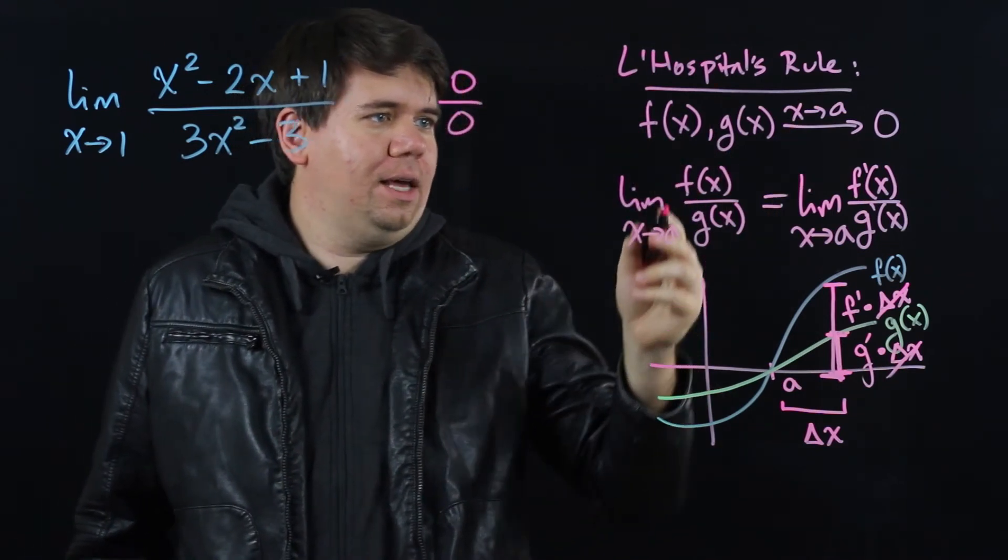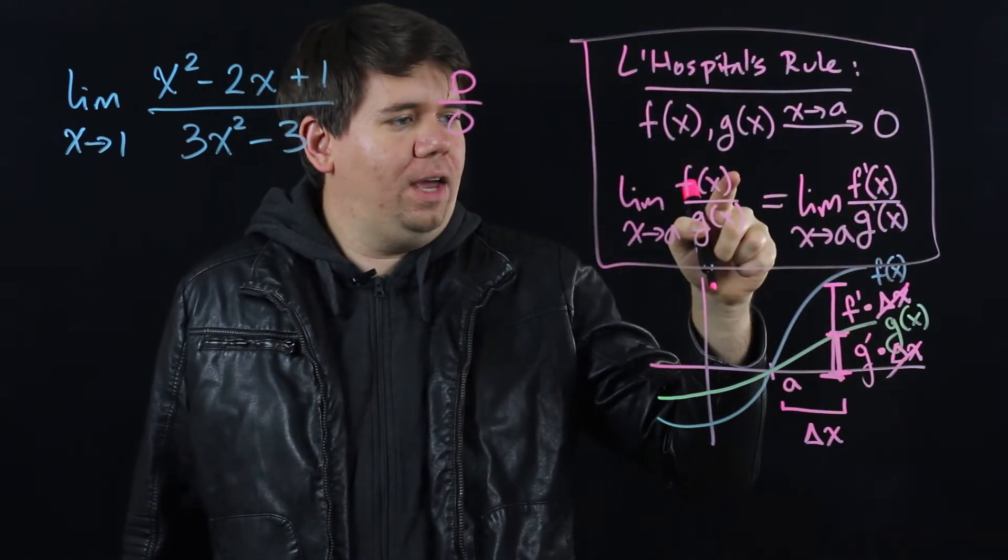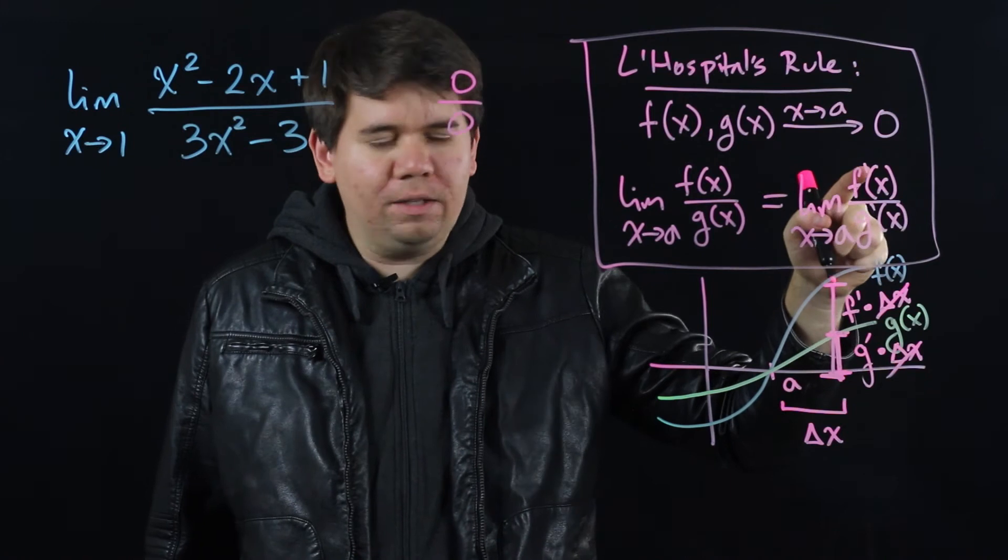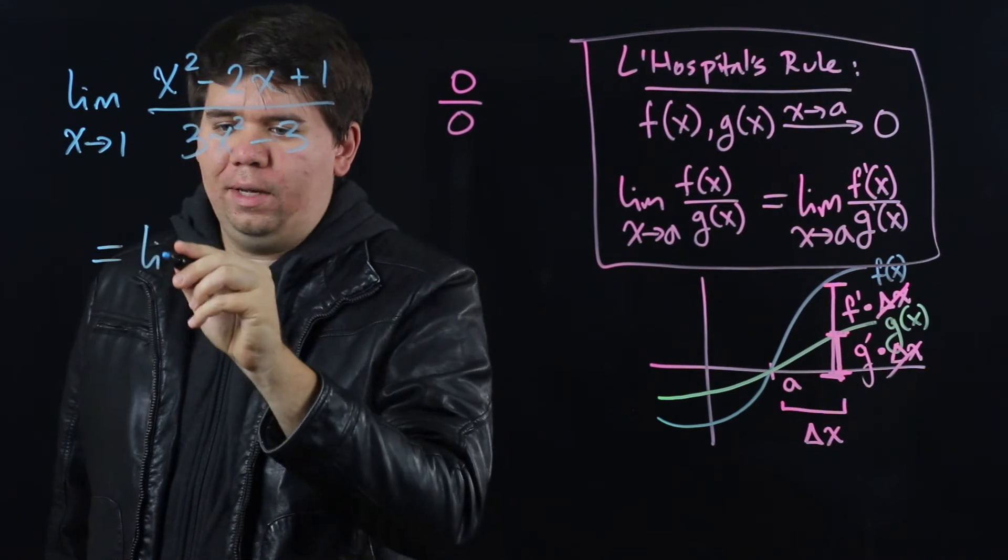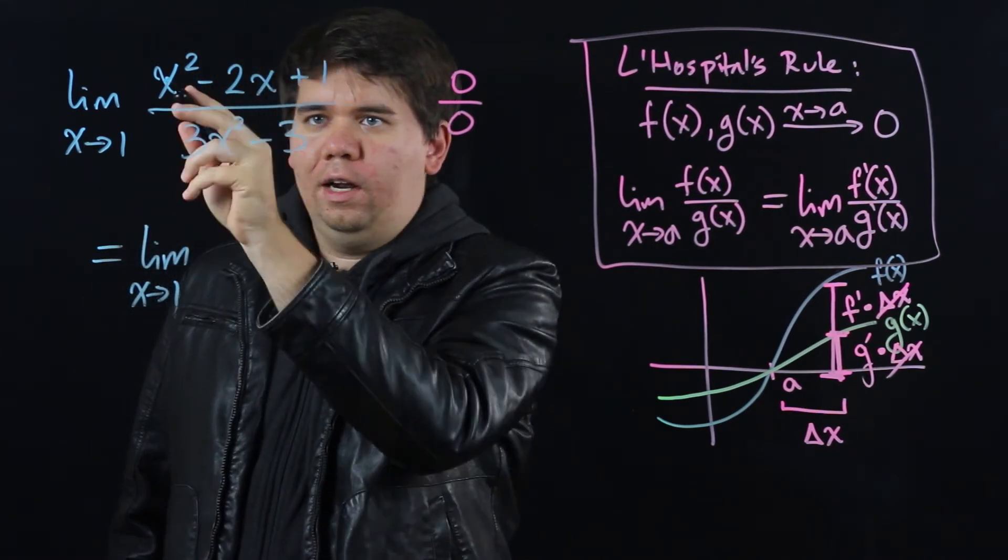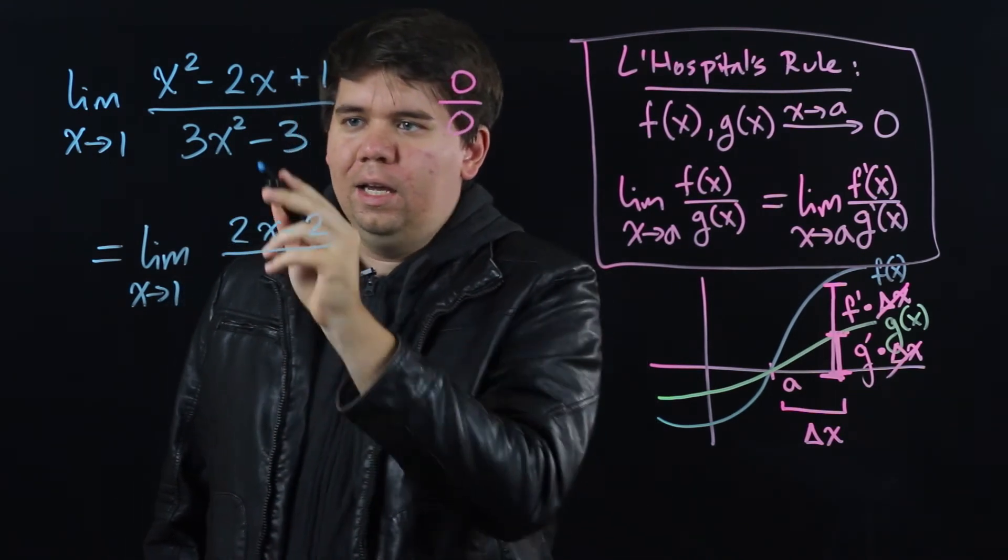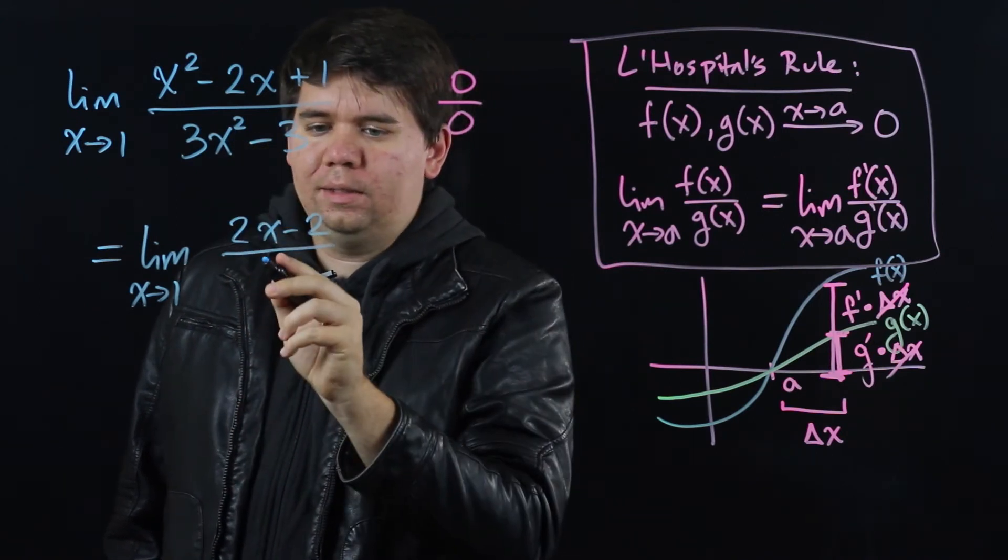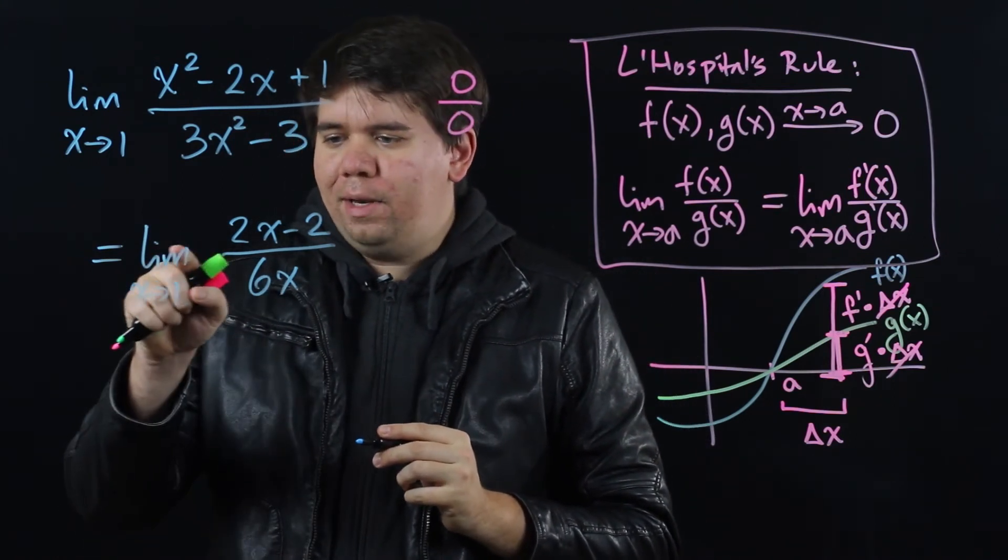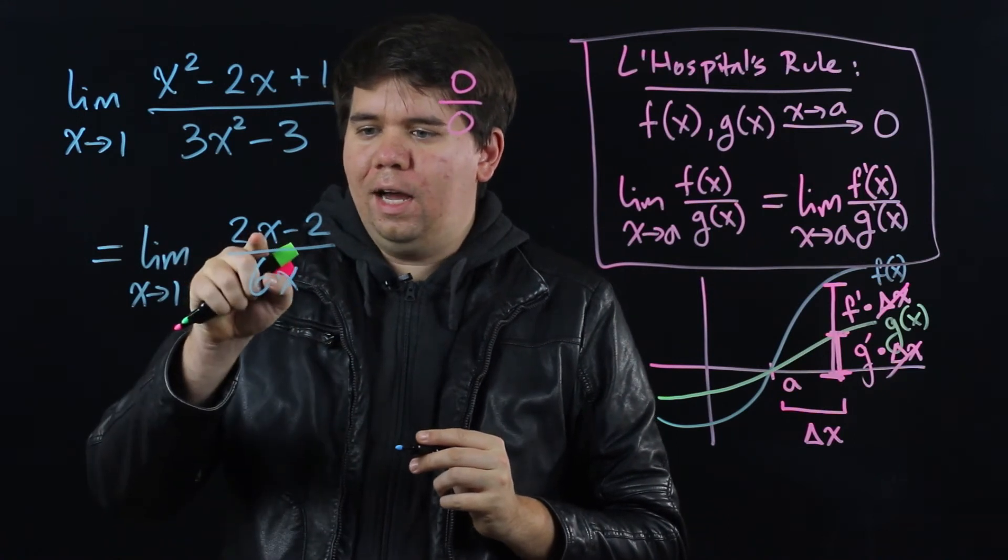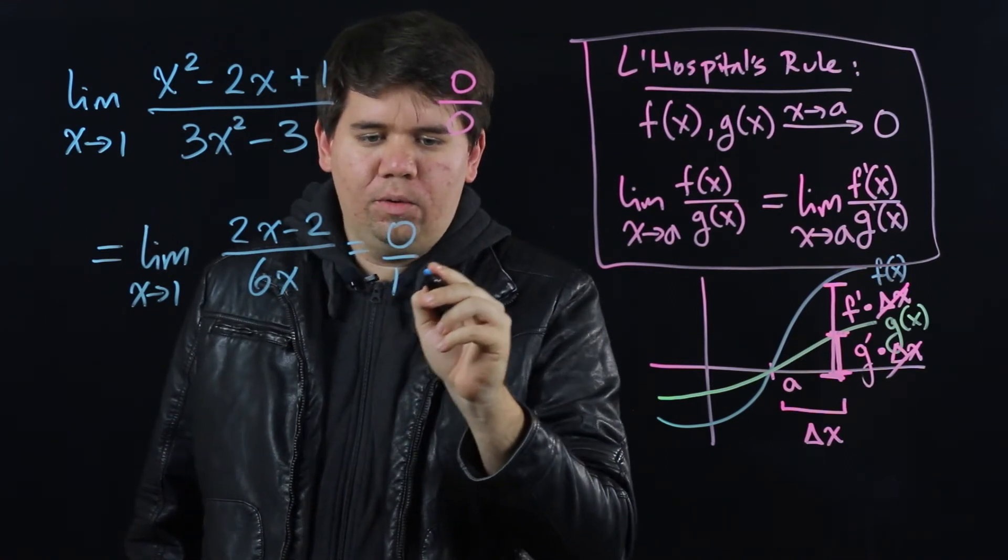But L'Hopital's rule tells us that when the top and bottom are both going to 0, then you can calculate the limit of f divided by g as just the limit of the derivative of f divided by the derivative of g. That is, this limit is the same as just the limit as x goes to 1 of the derivative of the top, 2x minus 2, divided by the derivative of the bottom, 6x. Now go ahead and take the limit as x goes to 1. Taking the limit as x goes to 1, now we get on top 2 minus 2, which is 0, and on bottom 6 times 1, which is 6.